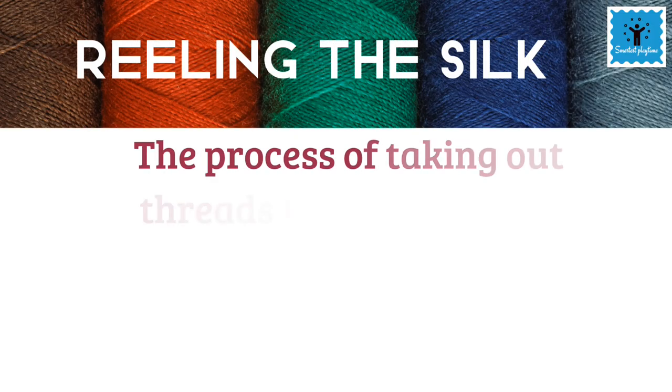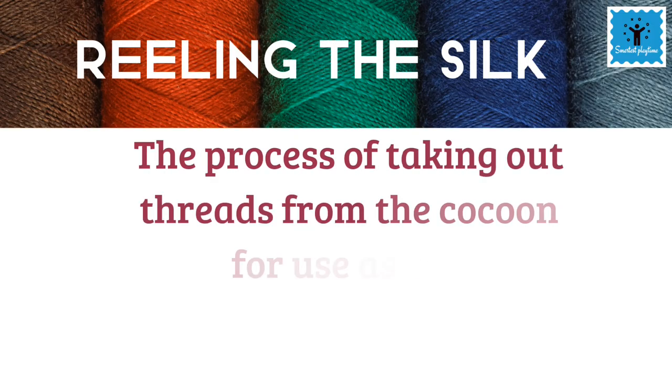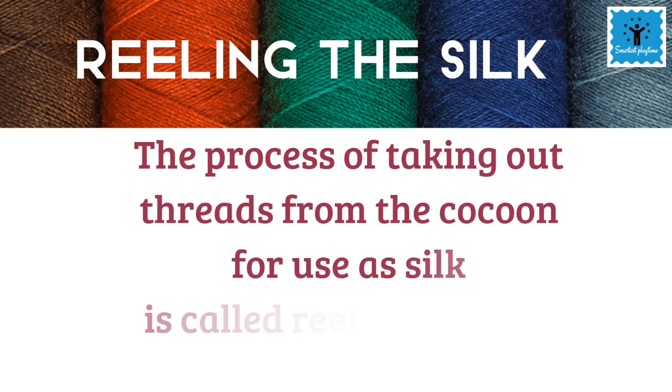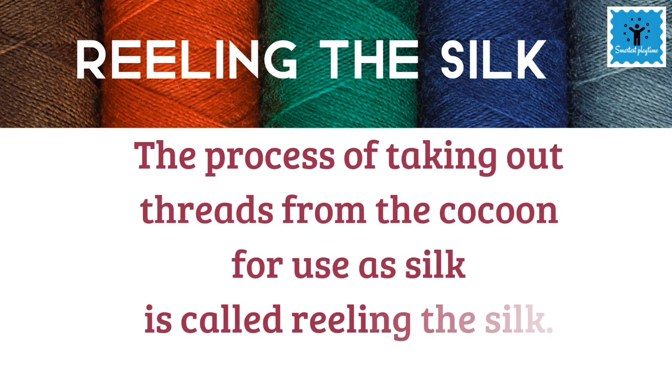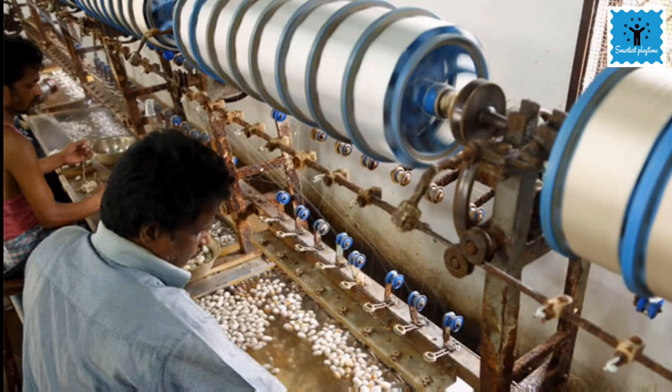The cocoons are kept under the sun, or boiled, or exposed to steam. The silk fibers are then separated out. The process of taking out threads from the cocoon for use as silk is called reeling, and it is done in special machines.